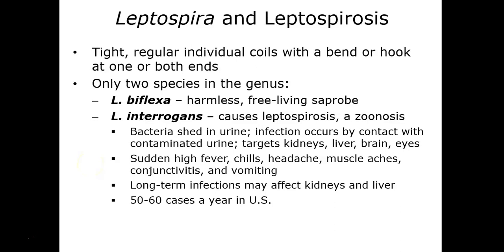Moving into the second group, the Leptospira cause a disease known as leptospirosis. The Leptospira are coiled cells that either bend or hook at one or both ends. There are only two species currently known: Leptospira biflexa, a harmless free-living form, and Leptospira interrogans, which causes leptospirosis. This disease is zoonotic and acquired through contact with contaminated animal urine.